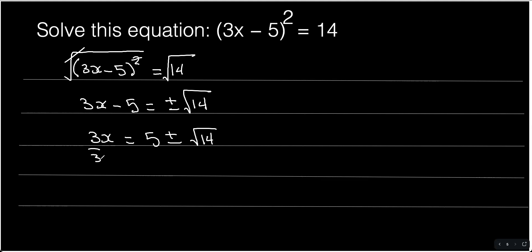And then we divide everything by 3. We have x equals 5 plus or minus square root of 14 all over 3, and that's your final answer.